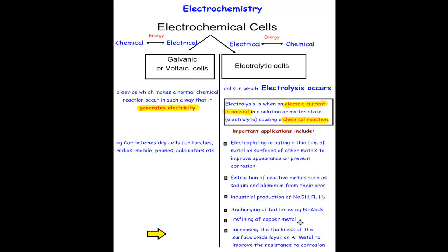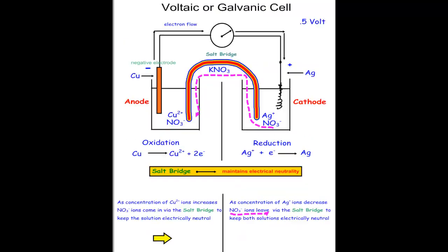The refining of copper metal. And the last one here is increasing the thickness of the surface oxide layer on aluminium metal to improve the resistance to corrosion.